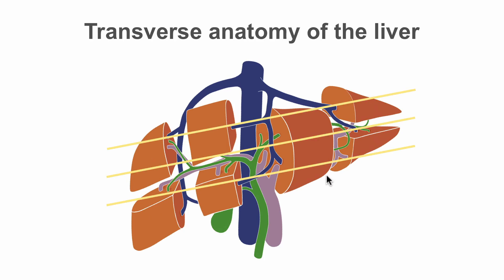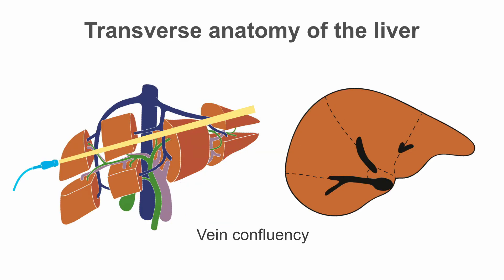The organization of segments can be demonstrated using three levels, starting cranially and going caudally: the level of the hepatic vein star, the level of the portal vein branching, and the level of the gallbladder or splenic vein. The most cranial level is the level of vein confluency, also known as the liver vein star. At this level we see the cranial segments of the liver: 1, 2, 4, 8, and 7.